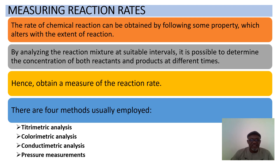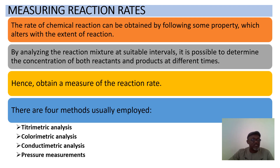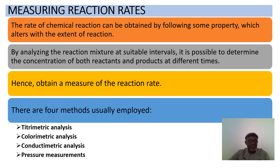By analyzing the reaction mixture at suitable intervals, it is possible to determine the concentration of both reactants and products at different times, giving us a measure of the reaction rate — by dividing concentration by the time difference.